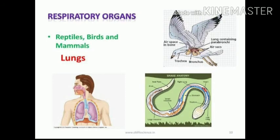Reptiles, birds, and mammals breathe with the help of lungs. Humans are mammals. We take in air through the nose, and it enters the lungs through the windpipe. The lungs are richly supplied with blood vessels. Oxygen from the air passes into the blood and carbon dioxide from the blood passes into the air, then comes out through the nose.